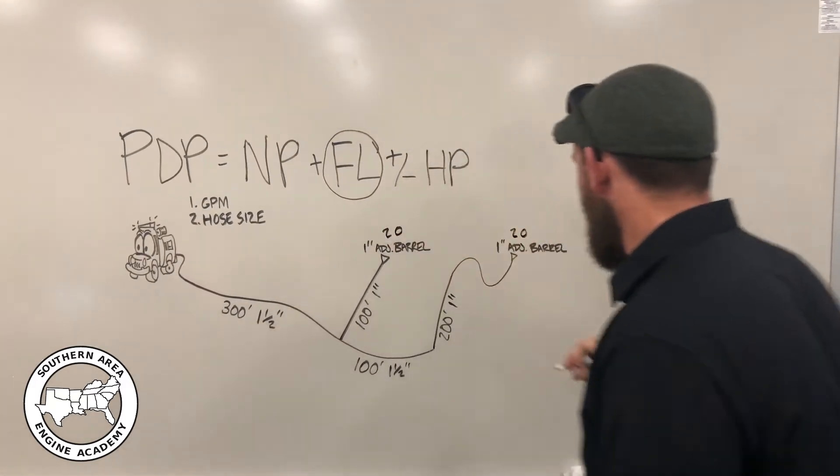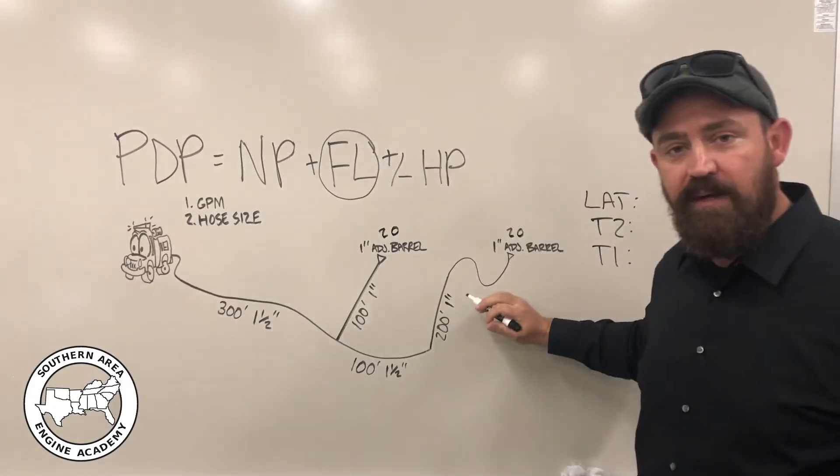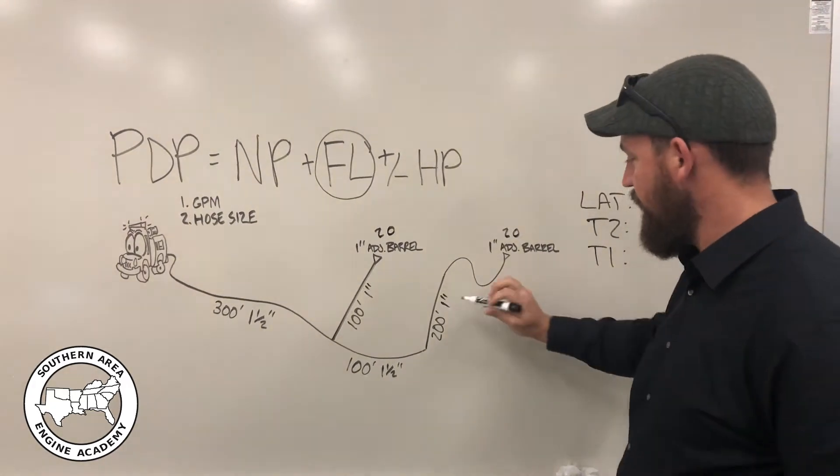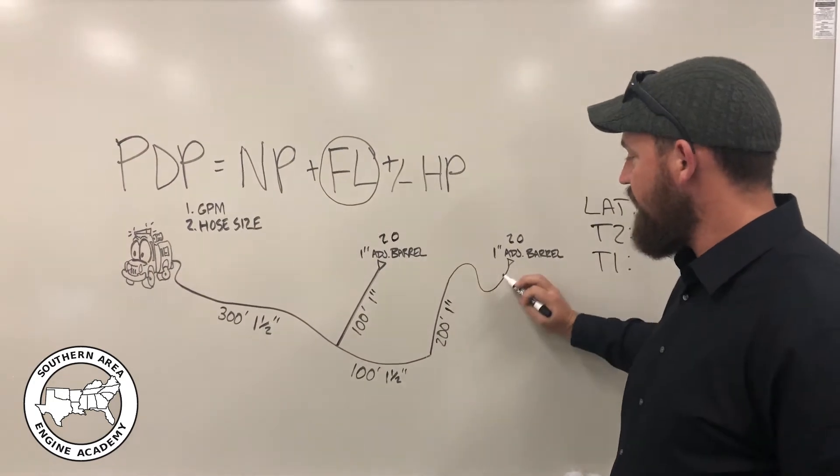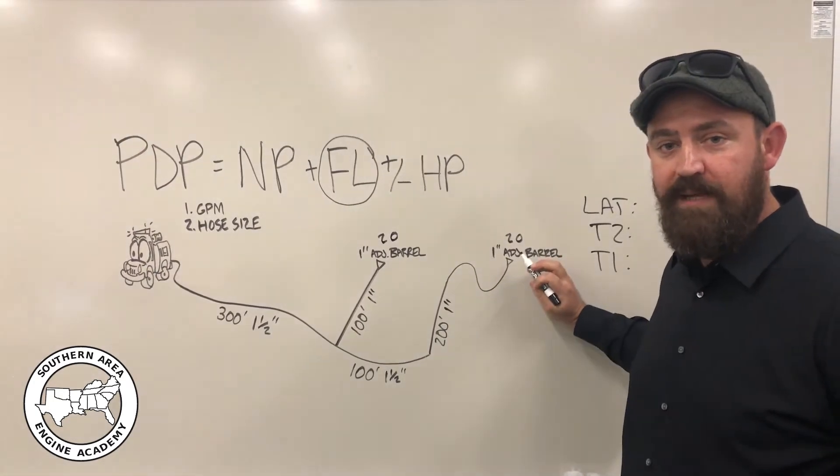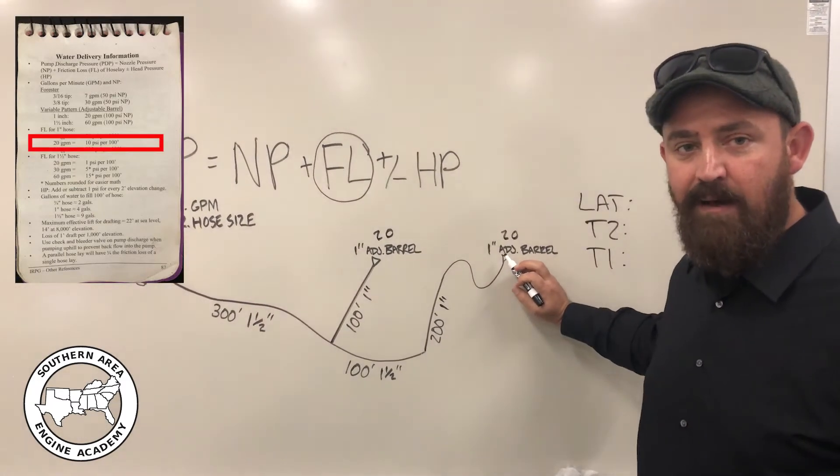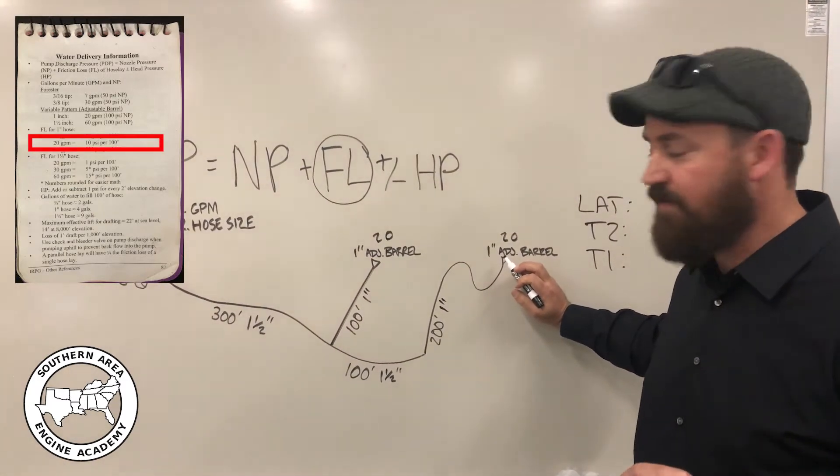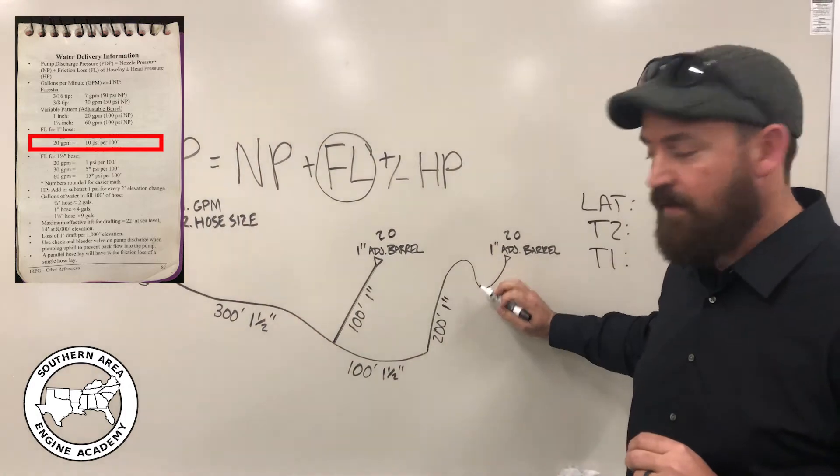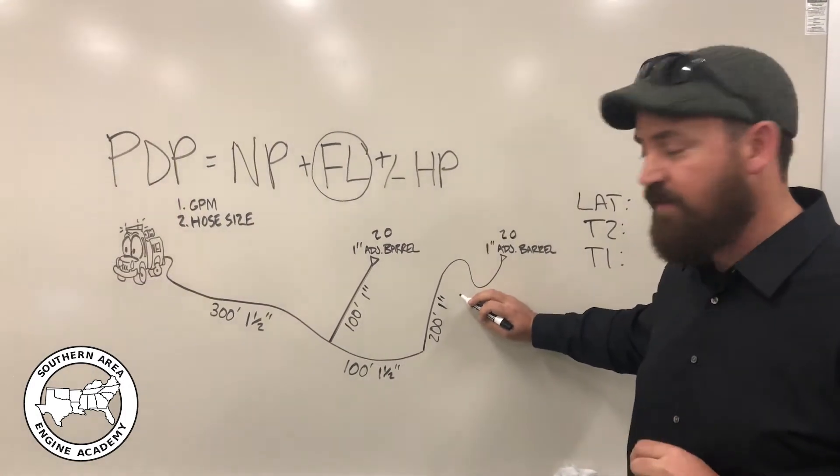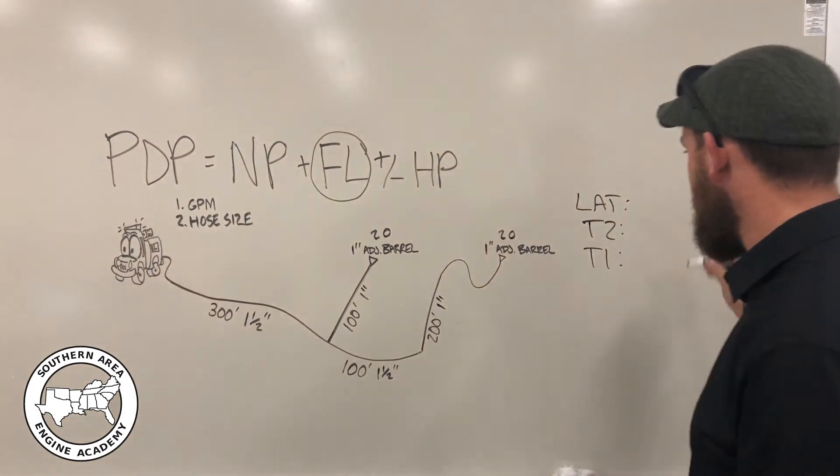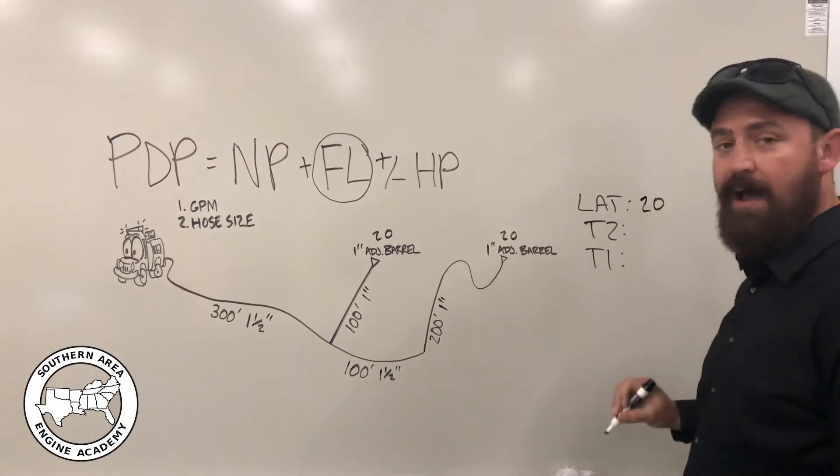Okay. So as we work back, we want to figure out what the friction loss for this lateral is. So we see, we've got 200 feet of one inch hose flowing at 20 GPM. We look at the IRPG, it tells us that we're going to lose 10 pounds of friction loss per section. So we've got 200 feet, that's two sections, each losing 10 PSI, so our lateral is losing 20 PSI.